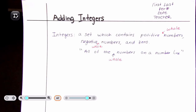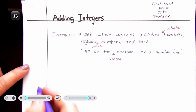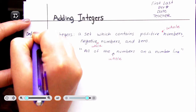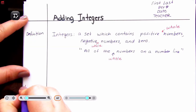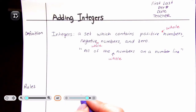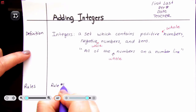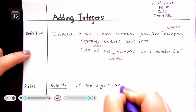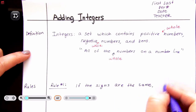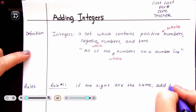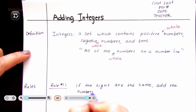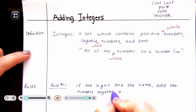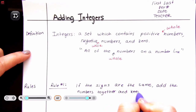Let's go ahead and start off with our rules. We need to establish what they are if we're going to continue. We're going to write out the definition here and our rules. So the first rule: if the signs are the same, add the numbers together and keep the same sign.